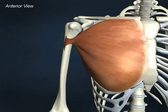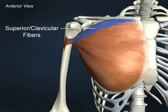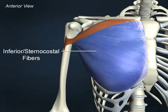The pectoralis major is the large superficial muscle of the arm located in the anterior thorax. It may be separated into two groups of fibers: superior or clavicular, and inferior or sternocostal.